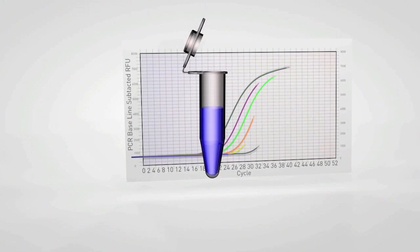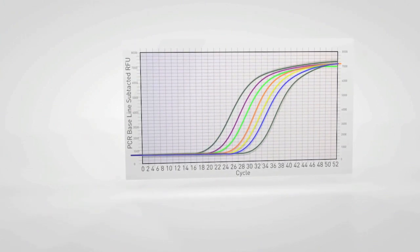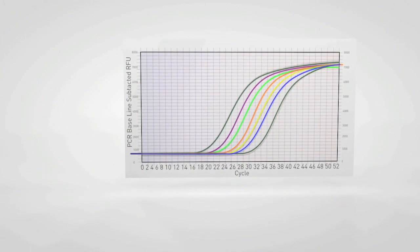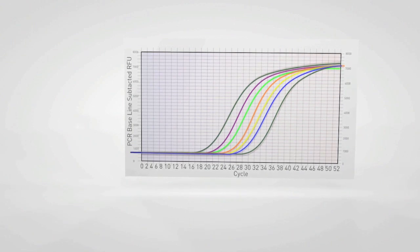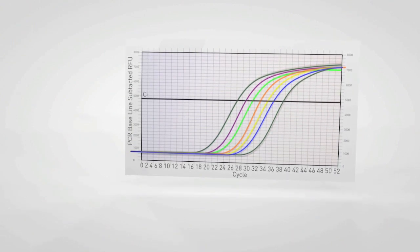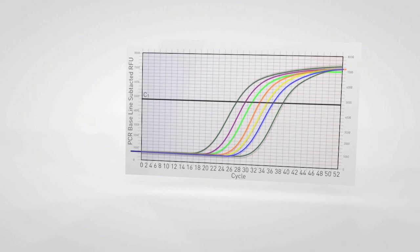Real-time PCR monitors each cycle in the amplification process to identify the point at which the signal of a reporter dye exceeds a predetermined threshold, the so-called cycle threshold or CT.